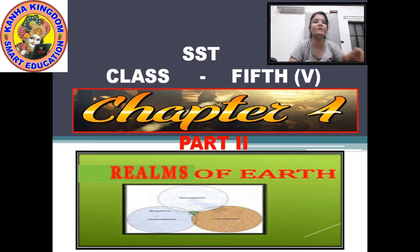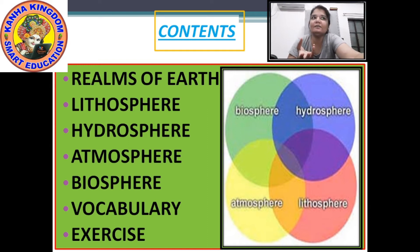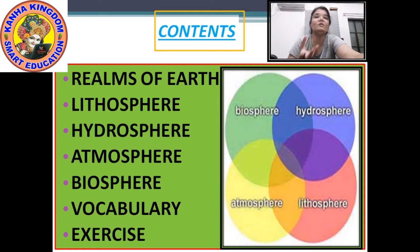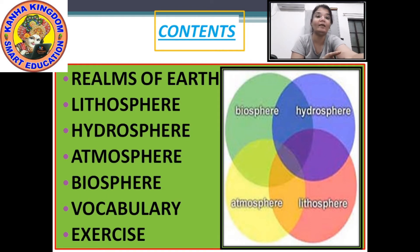Let's look at the contents. In Part 1, we had seen the realms of the Earth — the components of the Earth: lithosphere and hydrosphere. Now in Part 2, we will look at the atmosphere, what is biosphere, and of course the vocabulary and a short exercise. Whatever has been taught, please note down everything. It will help you write the answers to the questions in the exercise.